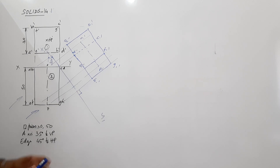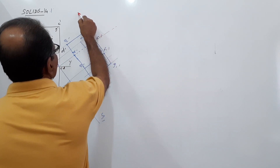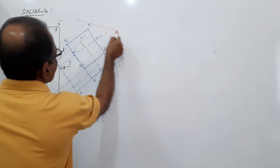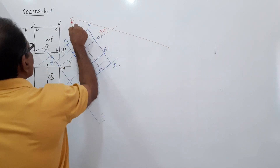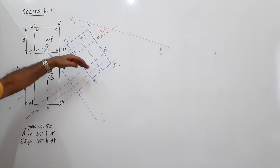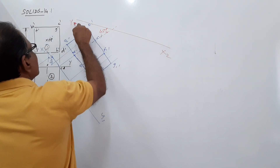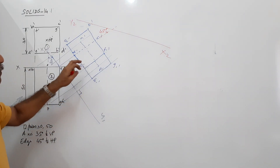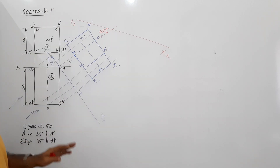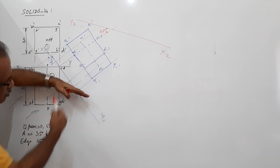The condition is that the face HTCD on which it is resting should make 45 degrees to X2Y2. So extend this and at 45 degrees draw X2Y2. When you draw X2Y2 there, you are going to draw a plan there. Mark X2 here and Y2 here, so that when you make X2Y2 horizontal, the elevation goes above XY and the plan comes below X2. That will be more comfortable.